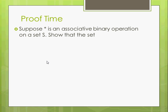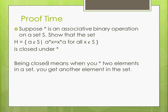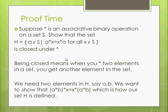Okay, so proof time. We've got an associative binary operation, and it wants us to show that this set here is closed under star. So remember, being closed means when you take two elements in the set, you get another element in the set. So we want to show that when we take two elements, A and B in our set, and we star that with some element in the bigger set, that it's commutative.